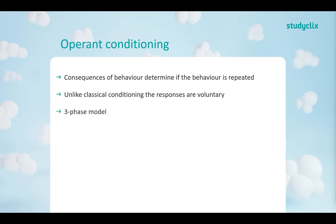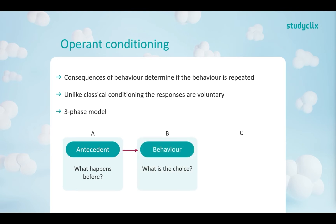Operant conditioning uses a three-phase model called the ABC model. A stands for antecedent — what happens before the behavior, what precedes it. B is the behavior — the voluntary action that is occurring. C is the consequence — the environmental event that occurs straight after the behavior.